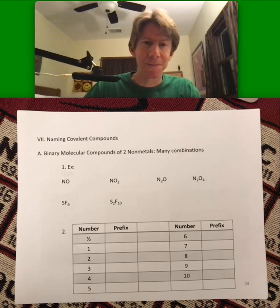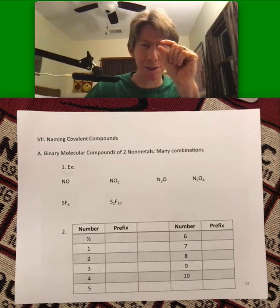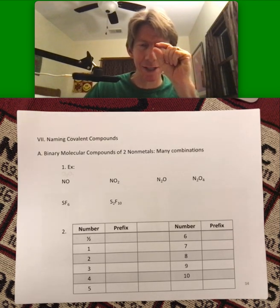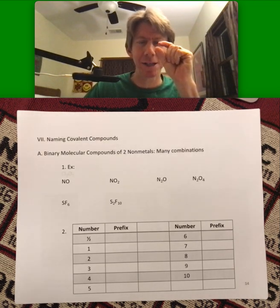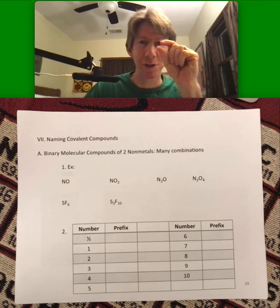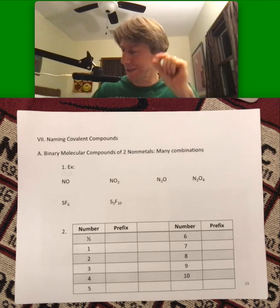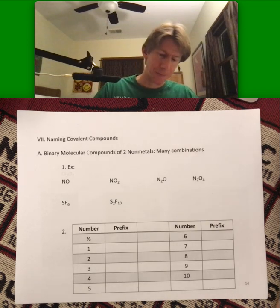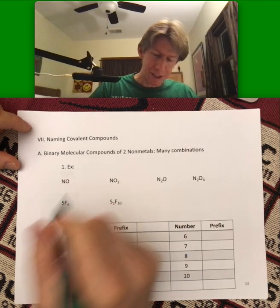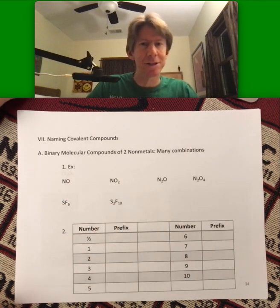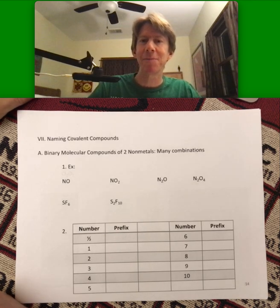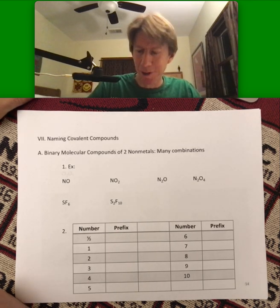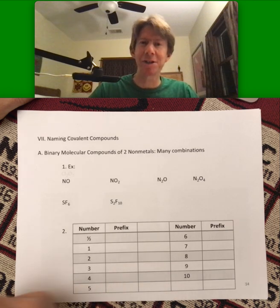About naming covalent compounds. And there are so many covalent compounds that we're just going to do a very slim sliver of the chemistry onion for this naming. But it will get us significantly farther towards preparing for life and general chemistry. Binary molecular compounds of two nonmetals. It turns out there are many combinations. So as I mentioned in a previous lecture outline video, we're going to need number prefixes for these.